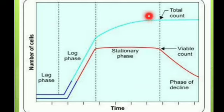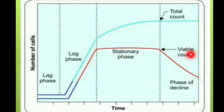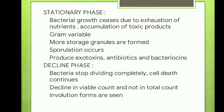Here, the total count indicates the total number of bacteria including live and dead in the specimen. And viable count measures the number of living cells only in a given specimen. The bacterium becomes gram variable in this phase and more storage granules are formed. Sporulation occurs in this phase and bacteria produce exotoxins, antibiotics, and bacteriocins.